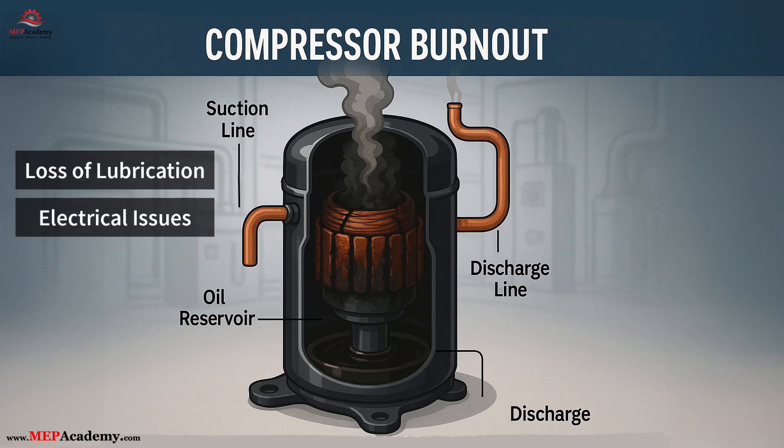Electrical issues like voltage imbalance or short circuits. Short circuits in a compressor typically occur when insulation on the motor windings breaks down due to overheating, moisture, or age, causing electrical contact between phases or to ground.